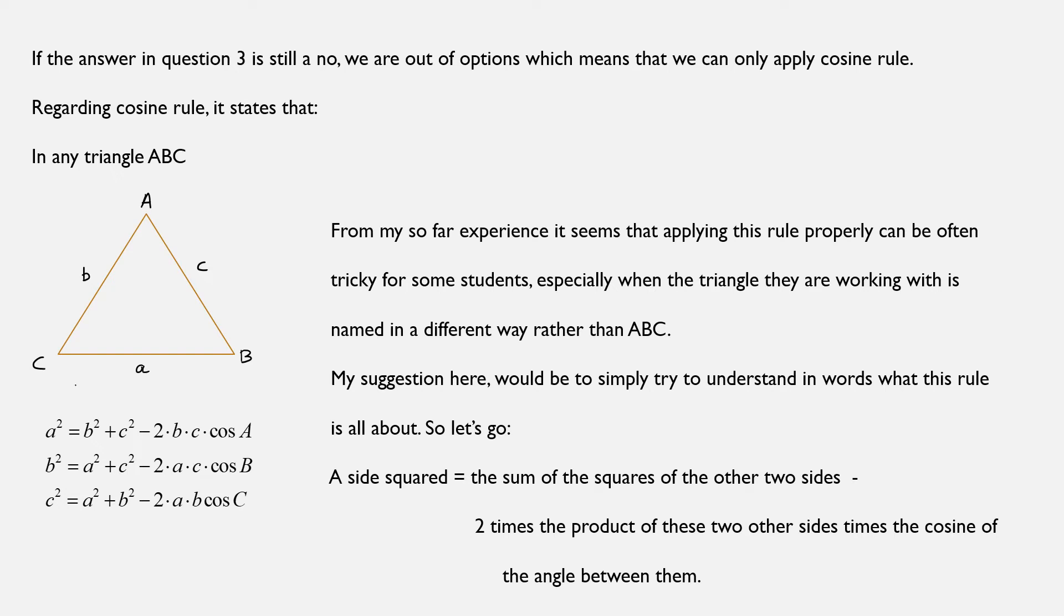Similarly, b squared is equal to a squared plus c squared minus 2ac cosine B. And finally, c squared equals a squared plus b squared minus 2ab cosine C.